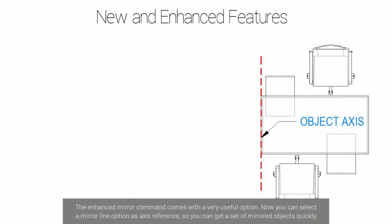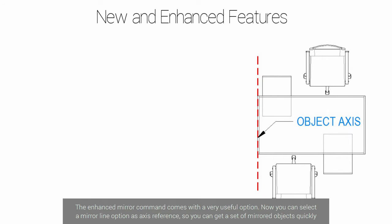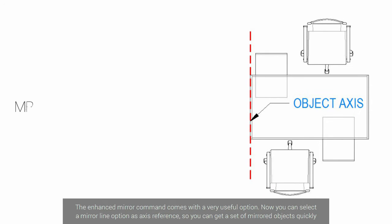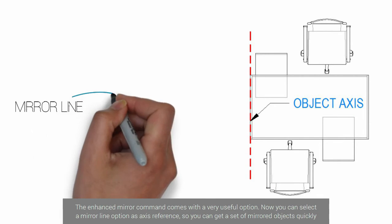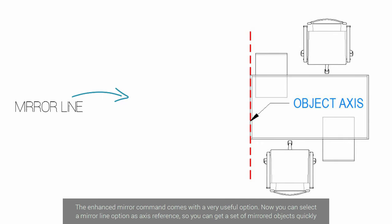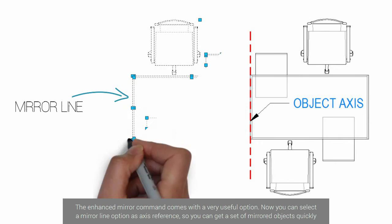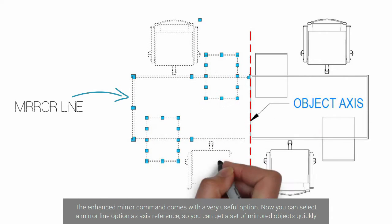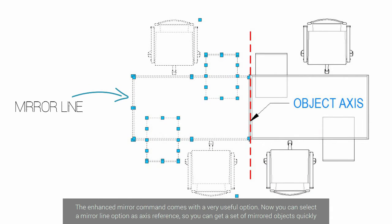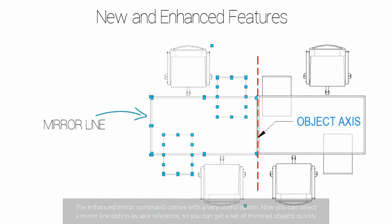The enhanced mirror command comes with a very useful option. Now you can select a mirror line option as an axis line reference so you can get a set of mirror objects quickly.